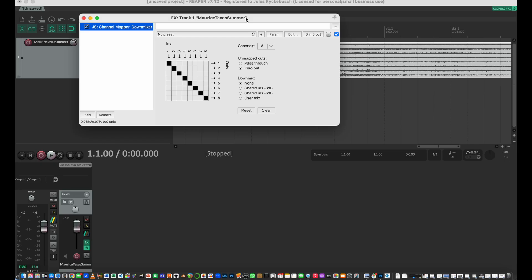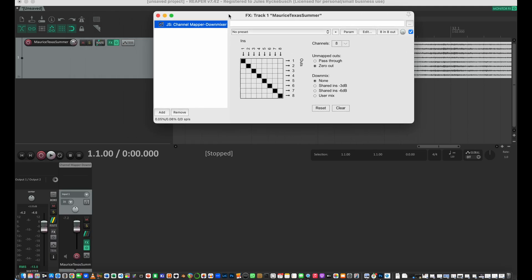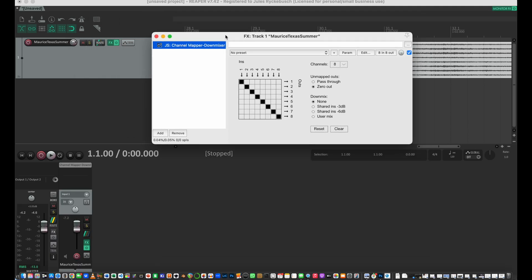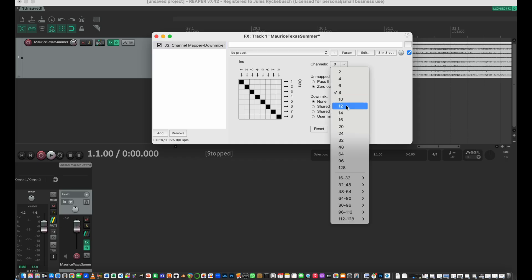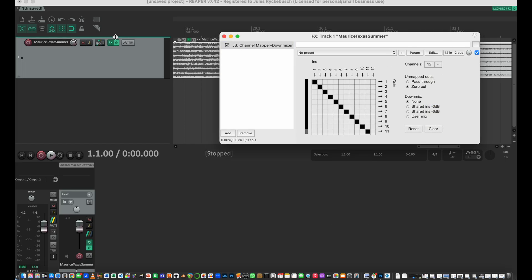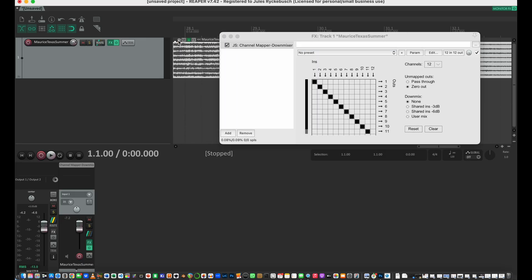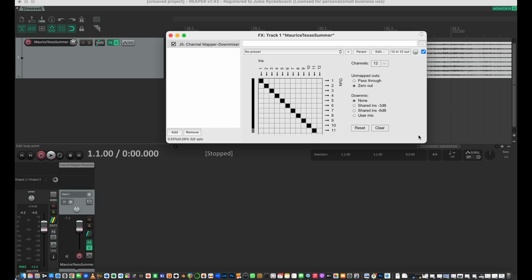So notice we have eight inputs and eight outputs. It is an eight channel WAV file, so that's the number of internal channels we have on that track. So what we need to do is make it 12 because there are 12 outputs for 7.1.4. We can either do it here by going to 12 or you could actually come over into the routing and do it right here to make it 12 track channels.